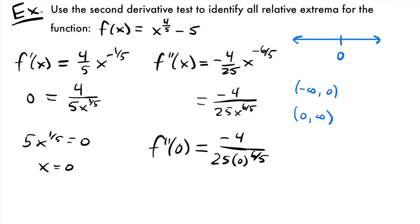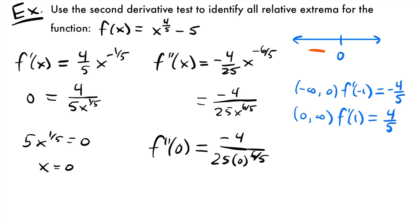Testing x = -1 in the first interval: f'(-1) = (4/5) × (-1)^(-1/5). The fifth root of -1 is -1, so this gives (4/5)(-1) = -4/5. That's negative, so the function is decreasing on that interval. Testing x = 1 in the second interval: f'(1) = (4/5)(1)^(-1/5) = 4/5. That's positive, so the function is increasing. Around x = 0, the function changes from decreasing to increasing, which means x = 0 is a relative minimum.